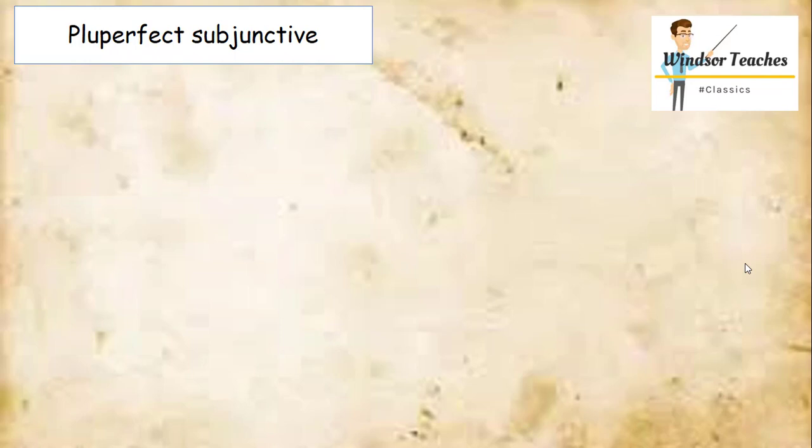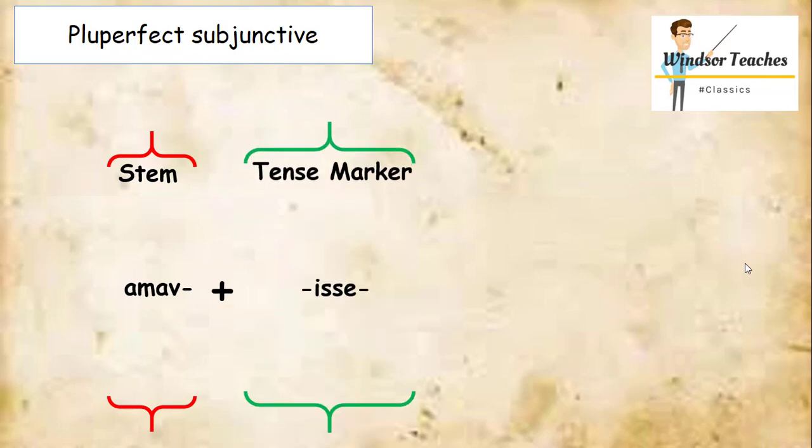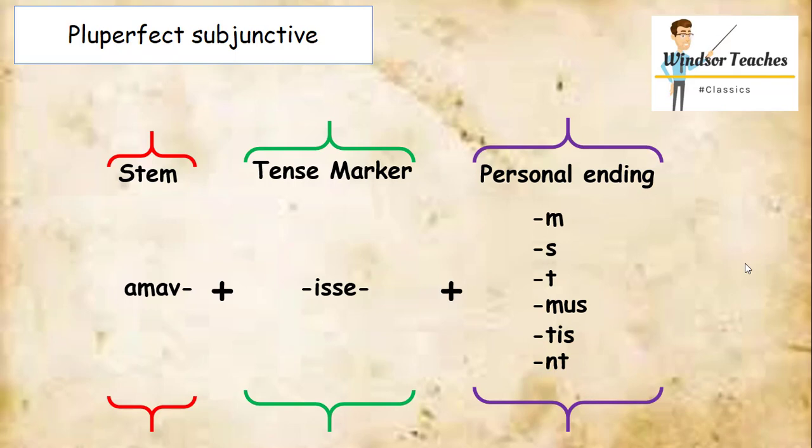So if it's a pluperfect subjunctive, I've used the word amo, first conjugation, meaning I love, for this example. So the stem for a pluperfect subjunctive might be amav. The middle part is going to be the tense marker. So isse is going to go in the middle there. So amavisse, and then we're going to add our personal ending, which is going to be m, s, t, mus, tis, or unt.